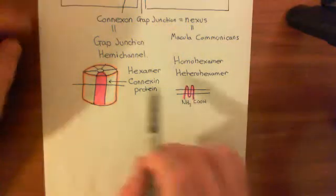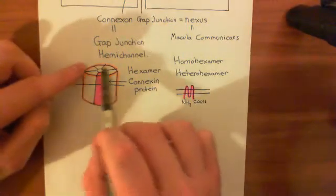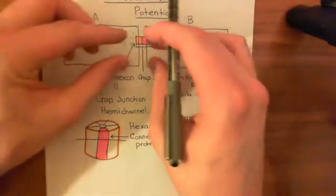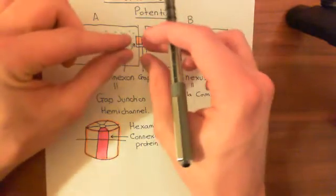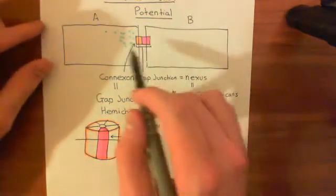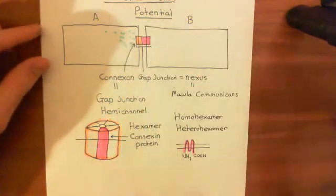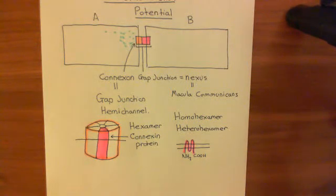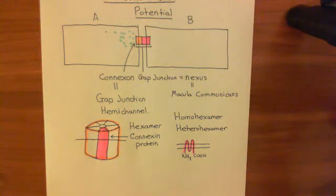You put six of these together to make a connexon, and then each of the cardiomyocytes produces a connexon and binds the two of them together. What you get is a complete channel between cardiomyocyte A and cardiomyocyte B — that electrical window that allows ions to move between them is what's known as a gap junction, or a nexus, or a macula communicans.